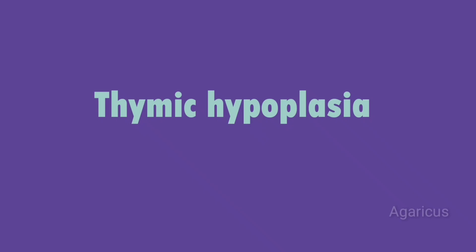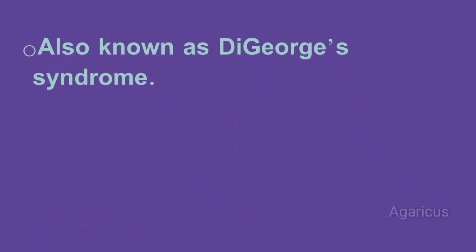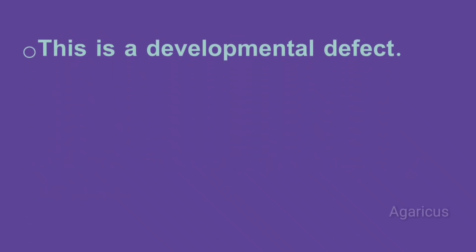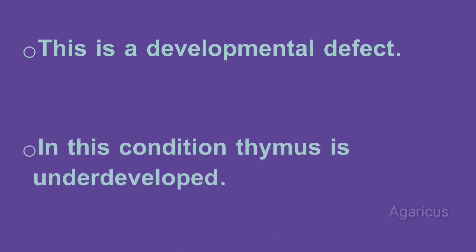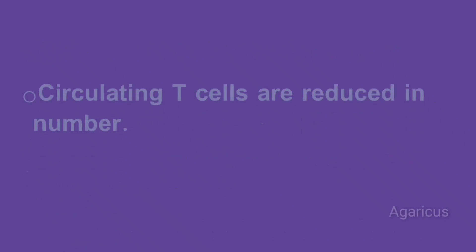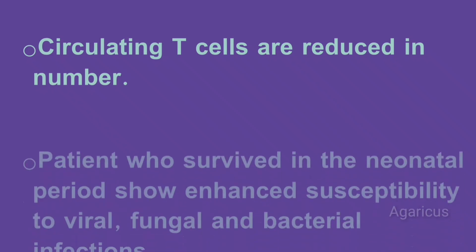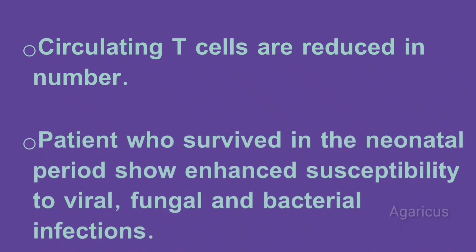Thymic hypoplasia, also known as DiGeorge syndrome, is a cellular immunodeficiency disease. This is a developmental defect in which the thymus is underdeveloped. As a result, circulating T-cells are reduced in number. Patients who survive the neonatal period show enhanced susceptibility to viral, fungal, and bacterial infections.